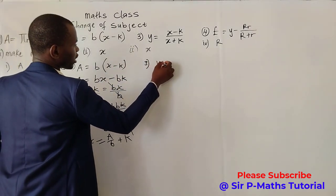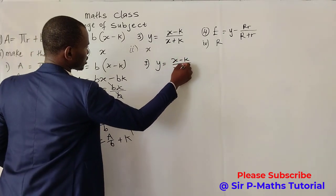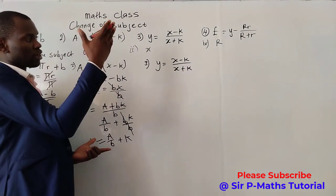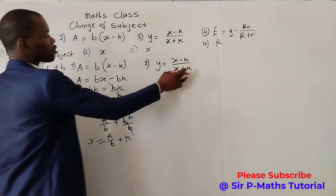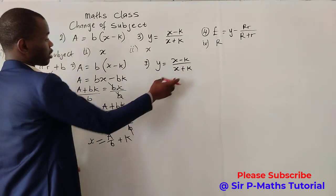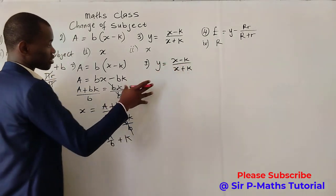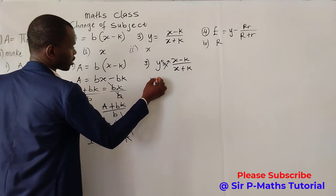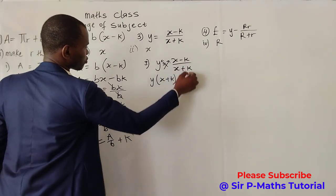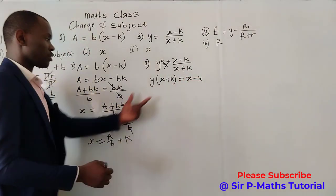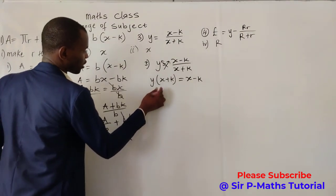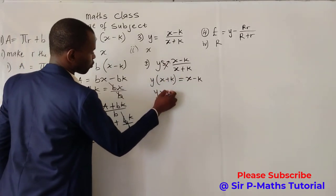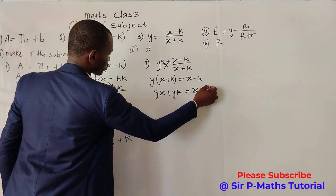For the third one: y = (x - k) / (x + k), making x the subject. Whenever you have a fraction, cross multiply. So multiplying across: y(x + k) = x - k. Opening the bracket gives yx + yk = x - k. We are making x the subject, so we need to bring the two x terms together.